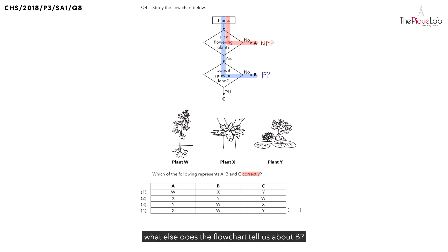Not only that, what else does the flowchart tell us about B? We know that B does not grow on land. So if B doesn't grow on land, it must grow in the water. Let's write this out. We know B is a flowering plant that grows in water.